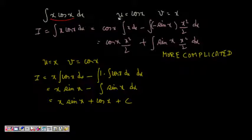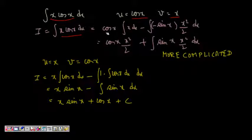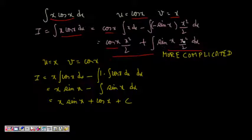First, let's try u = cos x and v = x. Applying the formula: cos x · ∫x dx = cos x · x²/2, minus ∫(du/dx · ∫v dx) dx = ∫(−sin x · x²/2) dx. We see this is becoming more complicated — initially we had cos x · x, now we have sin x · x²/2, which is a higher power of x and more difficult to solve.